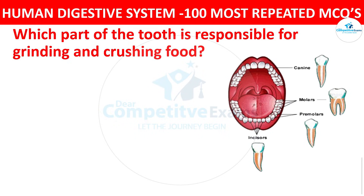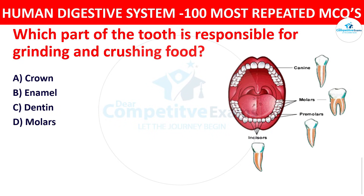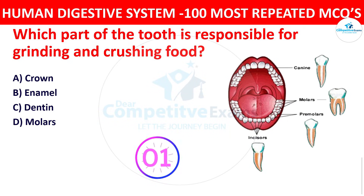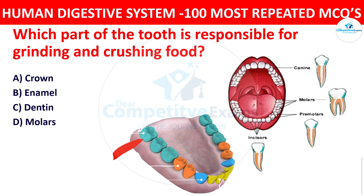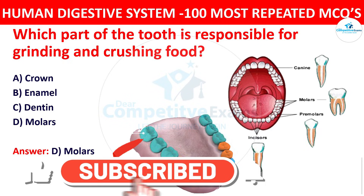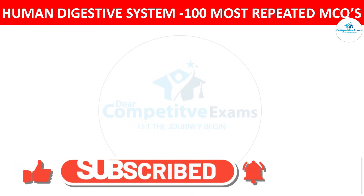Question number seventeen: Which part of the tooth is responsible for grinding and crushing the food? The options are crown, enamel, dentine, or molars. The right answer is molars. The molars are the flat teeth at the back of the mouth responsible for grinding and crushing the food.